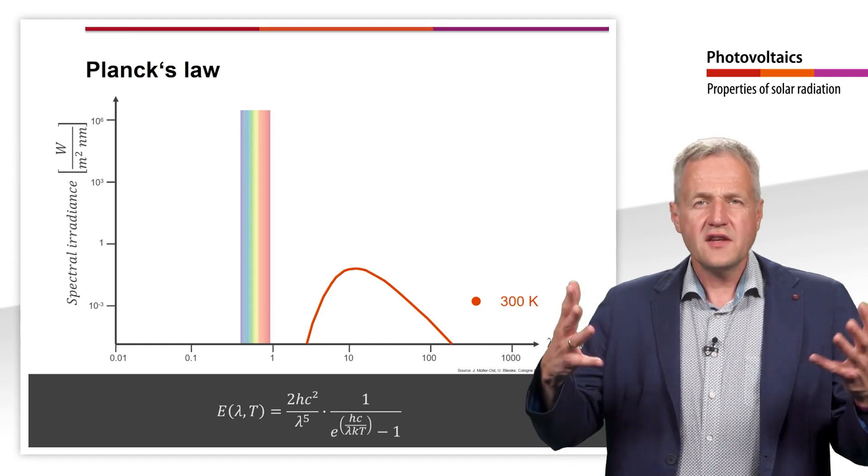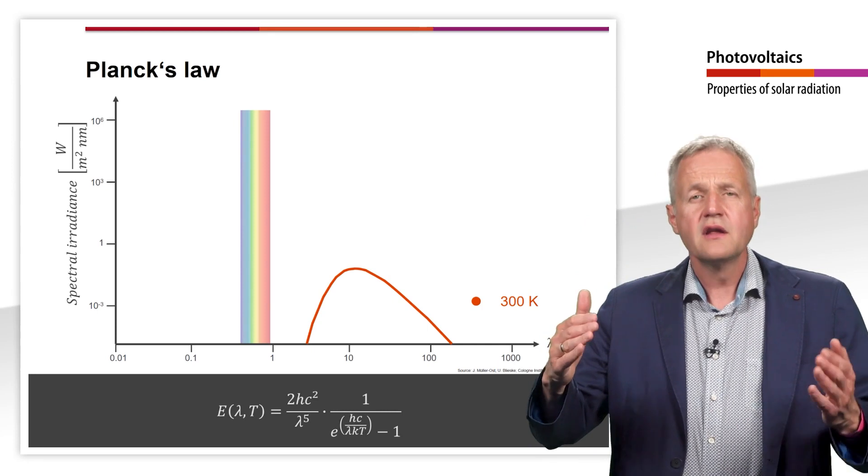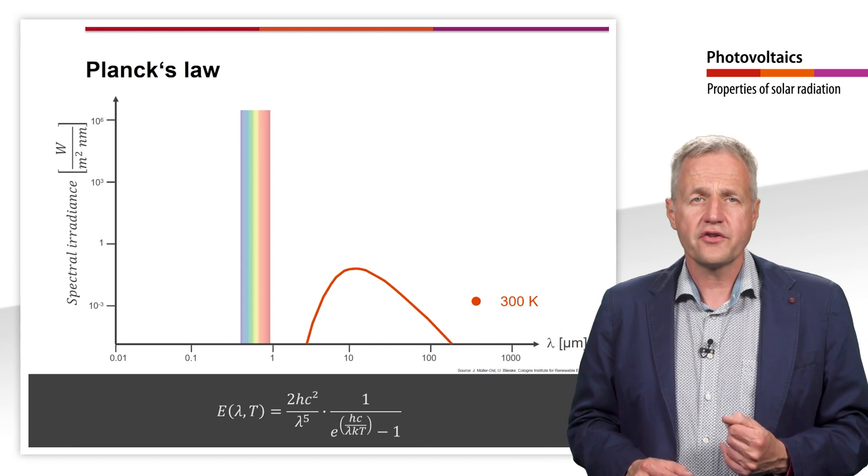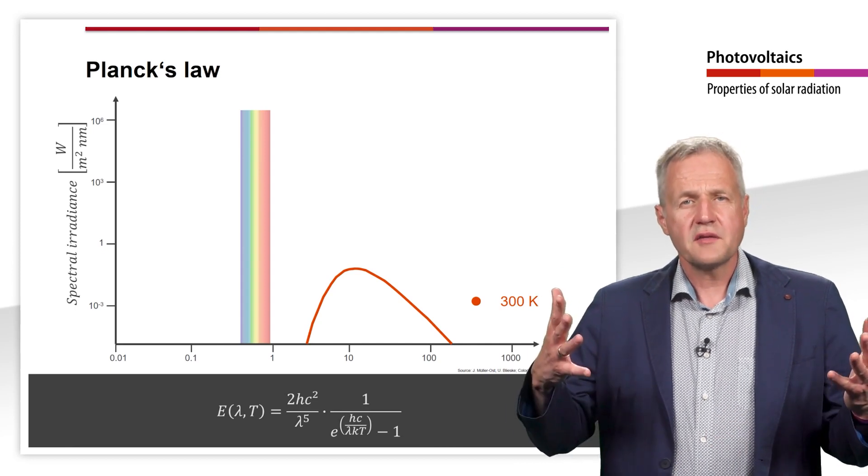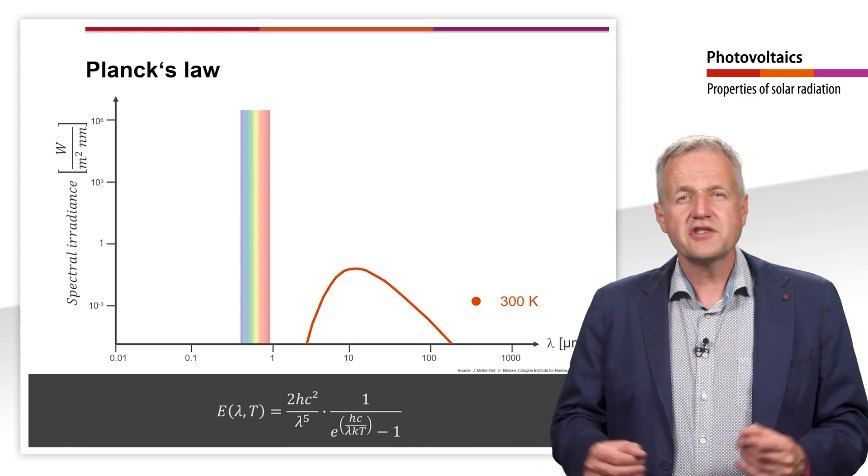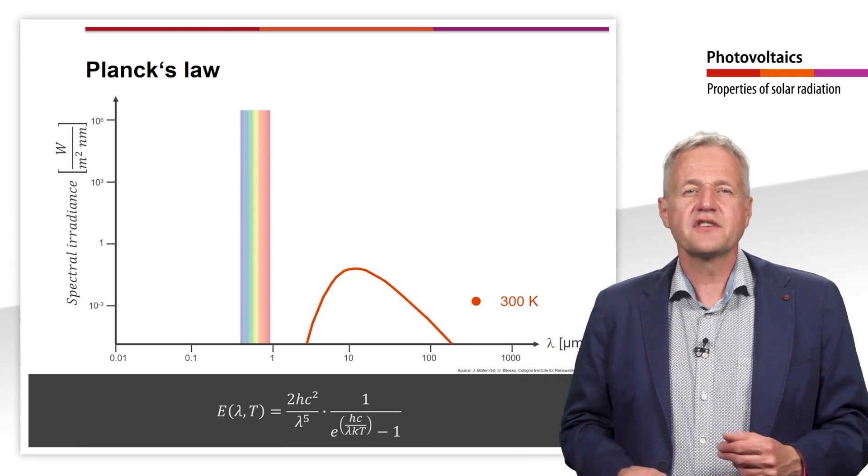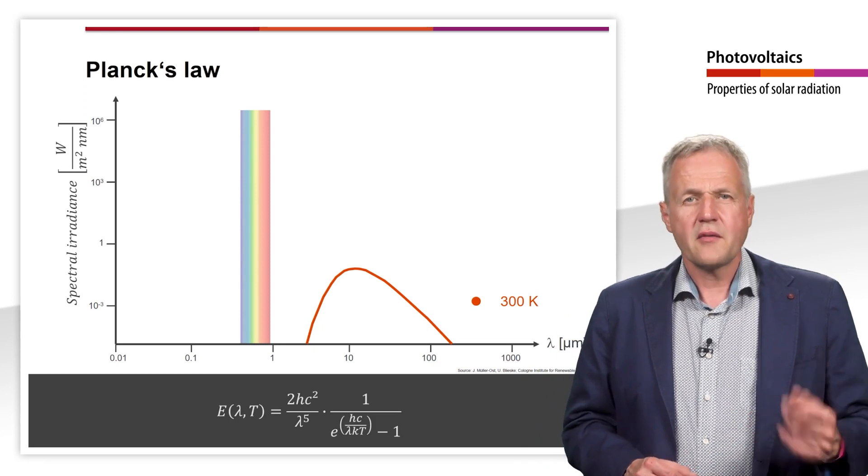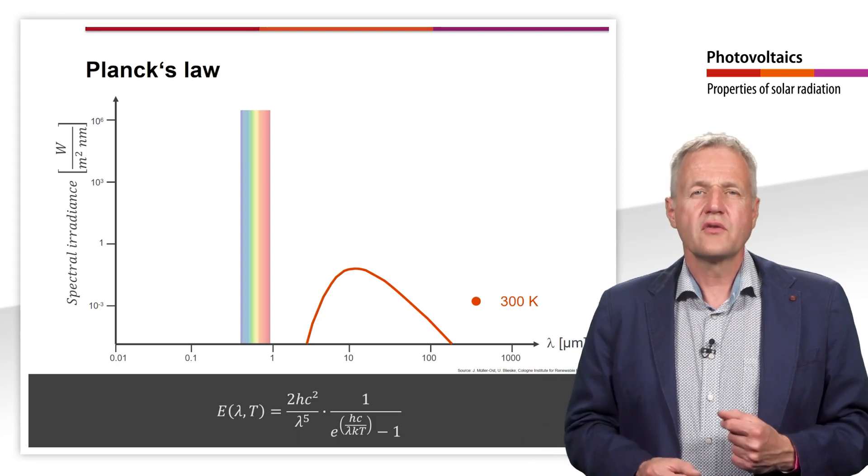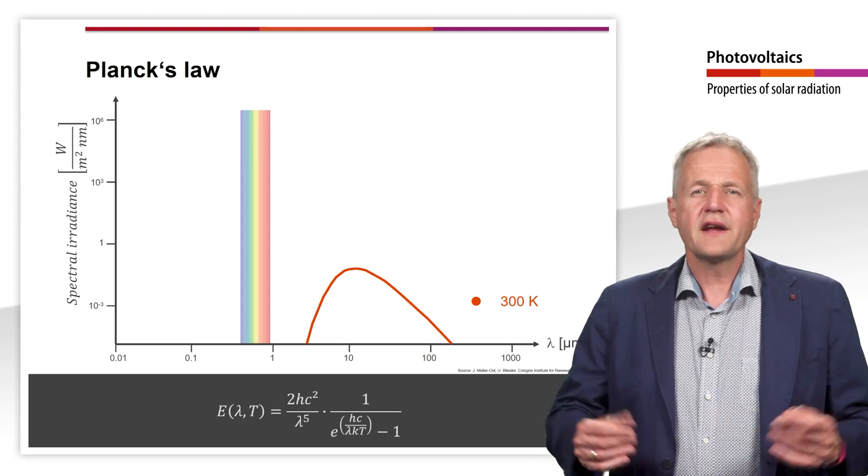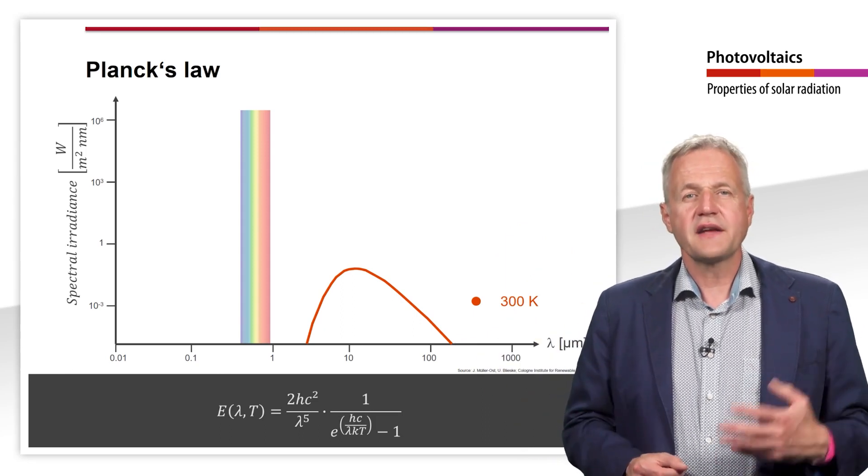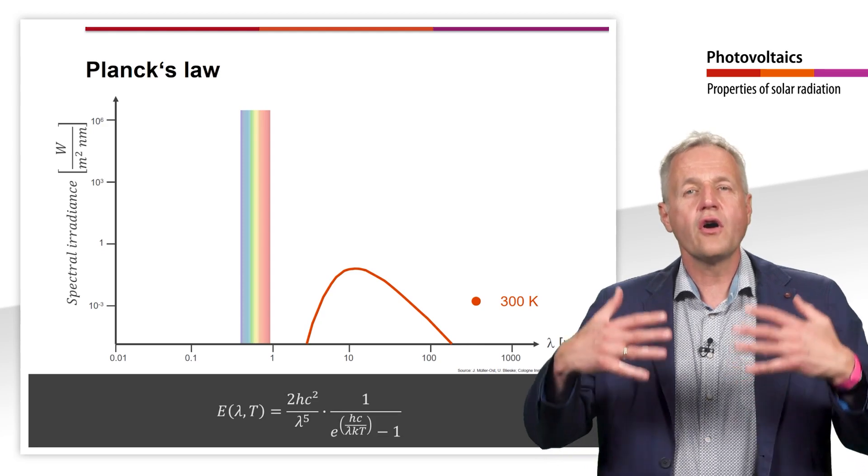You can see here the spectrum of a blackbody radiator whose temperature is approximately equal to the ambient temperature on Earth. Note that both axes do have a logarithmic scale. The radiation maximum of this radiator is about 10 µm and its spectrum does not include the visible range. However, as the temperature increases, the spectral range in which a blackbody radiator emits the radiation also increases.